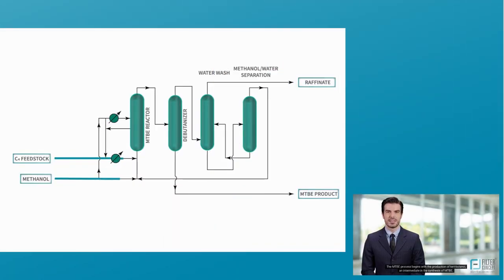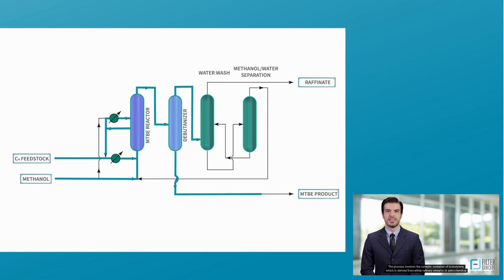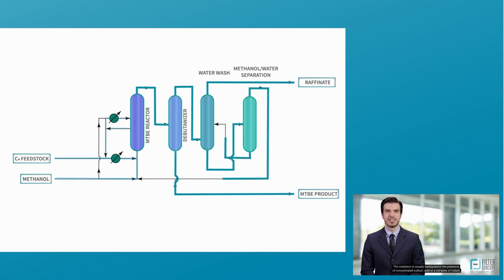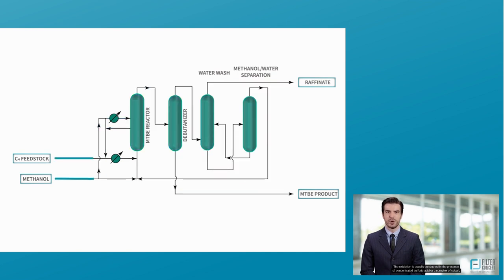The MTBE process begins with the production of tert-butanol, an intermediate in the synthesis of MTBE. The process involves the catalytic oxidation of isobutylene, which is derived from either refinery streams or petrochemical feedstock. The oxidation is usually conducted in the presence of concentrated sulfuric acid or a complex of cobalt, magnesium, and aluminum.